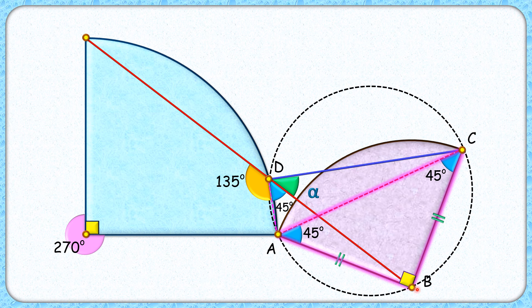Thus the angle at point D will be 45 degrees, or we can say alpha is nothing but 45 degrees.